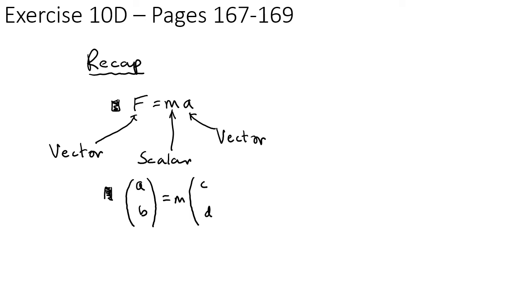having it written in the i-j notation. So if we had something like this, then we would get from the top row a equals m times c, and the bottom row b equals m times d. So each row gives you an equation which you can solve.